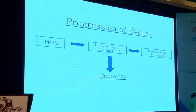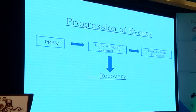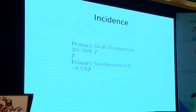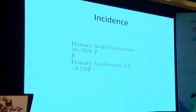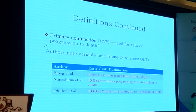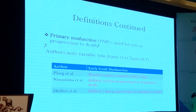What's important is what happens after reperfusion injury. Most of the time grafts recover, but on occasion — and of great concern — is the progression of early allograft dysfunction to primary nonfunction. There is a fair amount of difference in the criteria. The incidence of primary graft dysfunction has been estimated between 30 and 50%, and primary nonfunction between 0.9 and up to 10%. Primary nonfunction has a variable definition depending on time post-transplant, and in general relates to the need for re-transplant or progression to death.